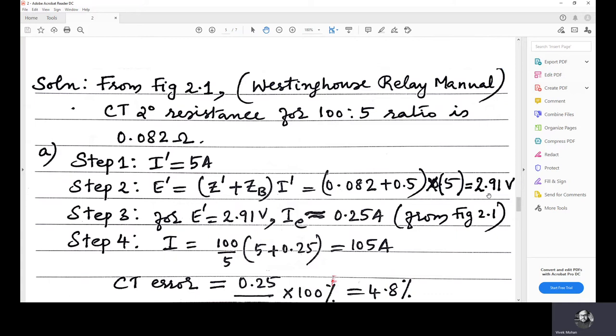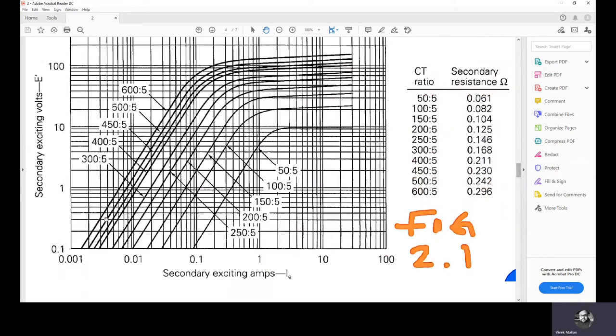Now, you know the value of E dash corresponding IE or the excitation current can be found out from the plot for 2.91. See here, this is 2 and this is 3, right? 2, 3, 4, 5, 6, 7, 8, 9, 10. So, this is 2, this is 3. So, just below 3 is 2.91, right? So, this will corresponding to this value will take the excitation value from the 100 is to 5 plot. This is the 100 is to 5 plot. So, this is the point. At this point, you take the IE value.